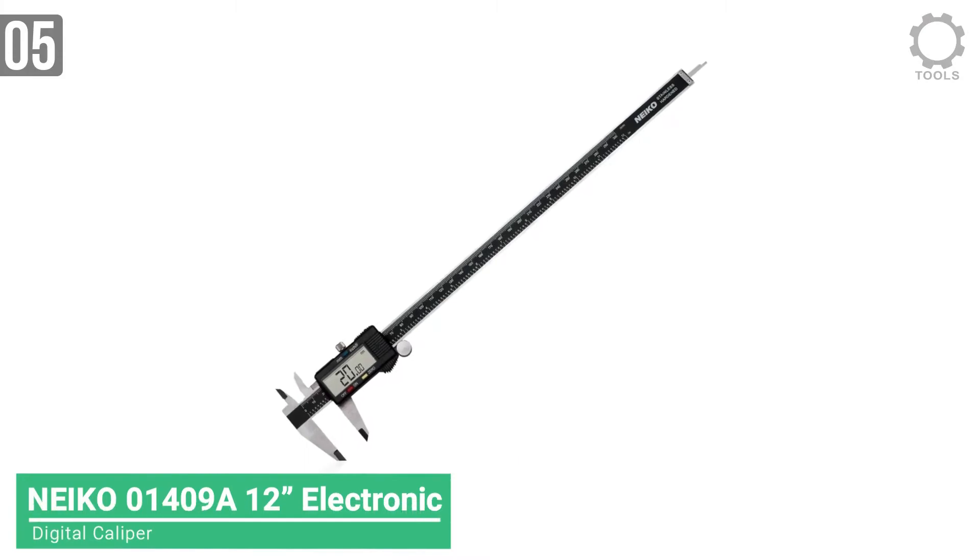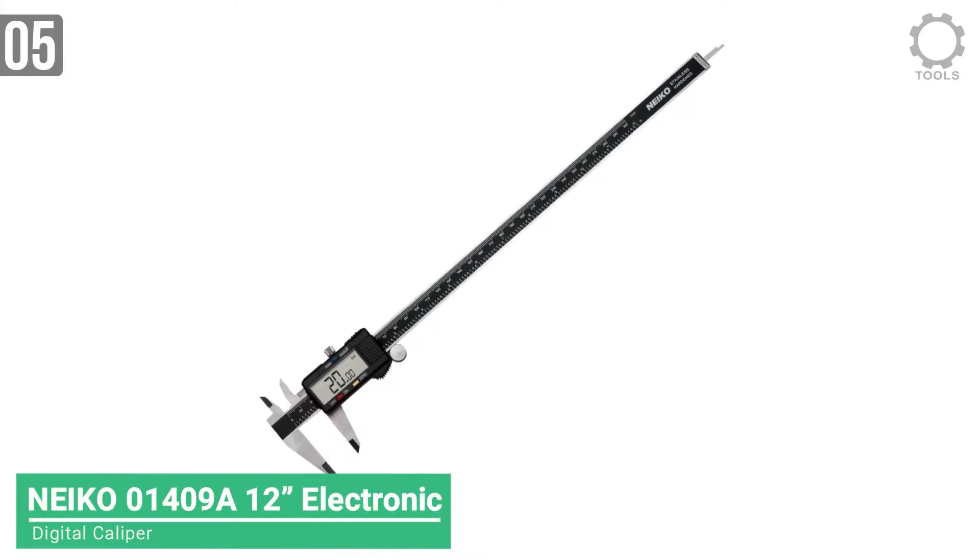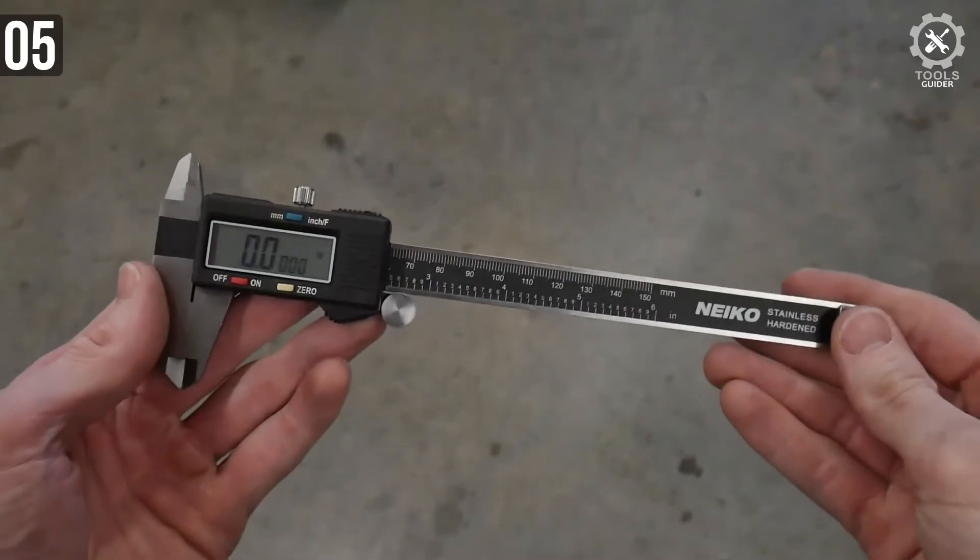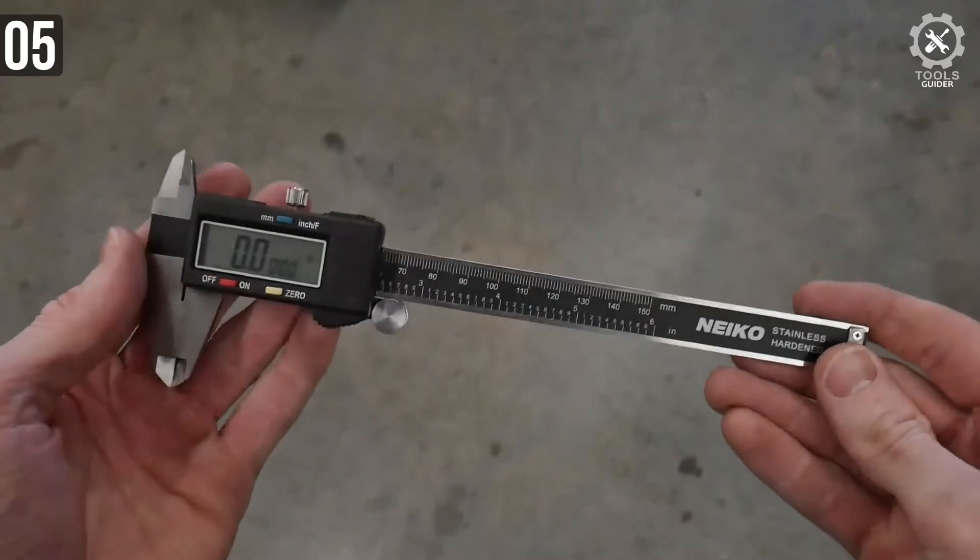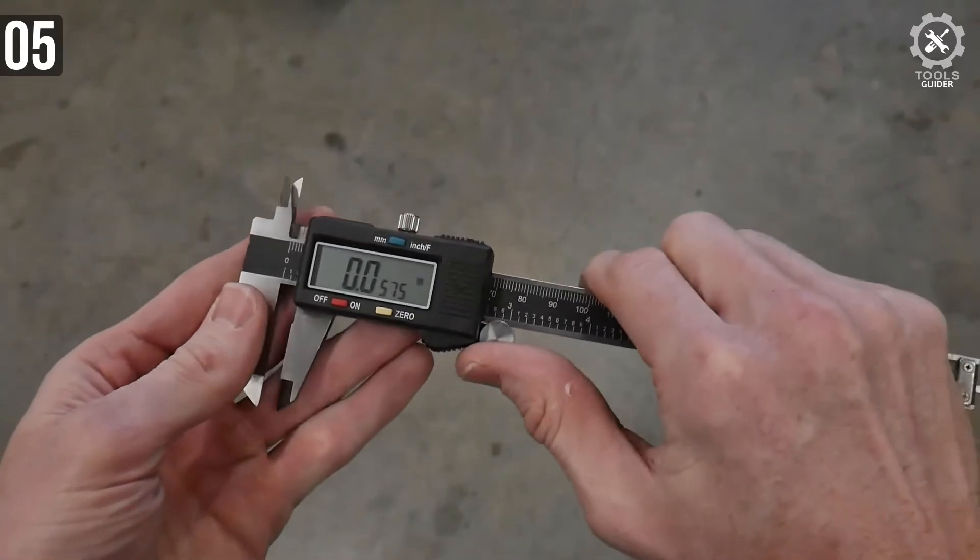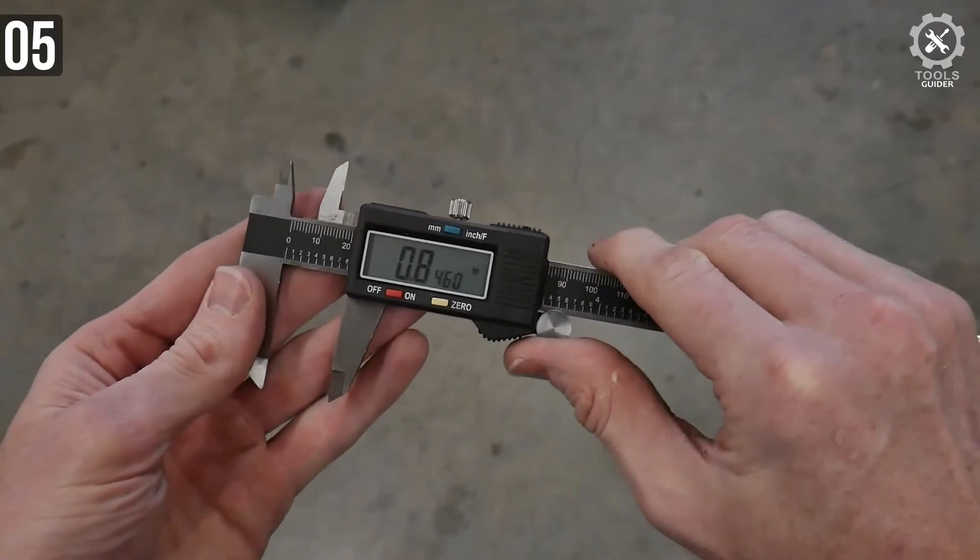Number 5: Nyko 01409A 12-Foot Electronic Digital Caliper. Nyko 014039A is a 12 digital calipers. With the press of a single button, you can change between three measuring modes: inch, fractions, and millimeters.